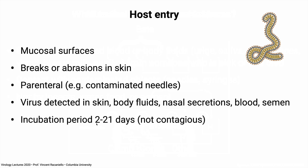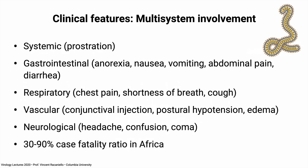Ebola causes multi-system infection involving the gastrointestinal, respiratory, vascular, and neurological systems. The virus replicates in many tissues and induces an overabundant immune response that can't be controlled. Case fatality ratio is 30 to 90% in Africa. With proper medical care the case fatality ratio can be lowered — these patients can be saved. This is very typical of a zoonotic spillover: a virus entering a brand new host where it hasn't evolved for many years results in very serious disease.